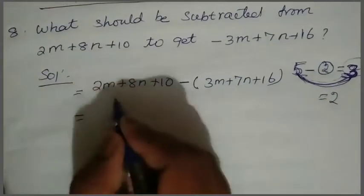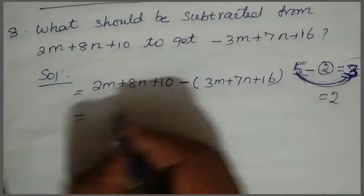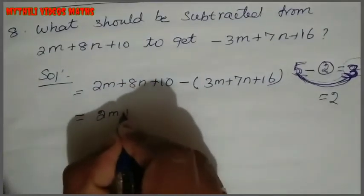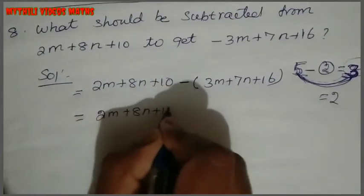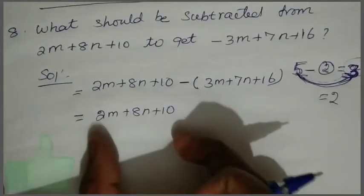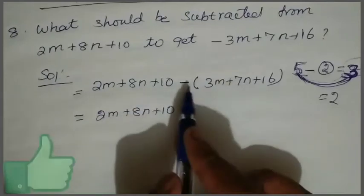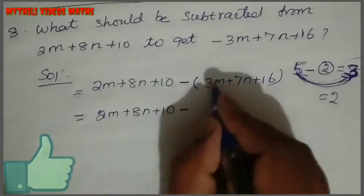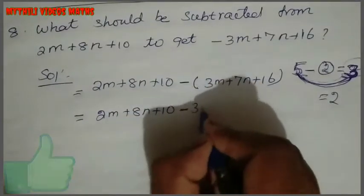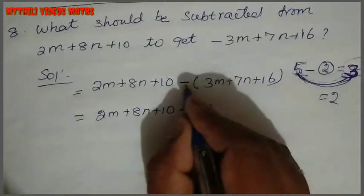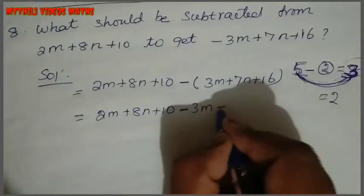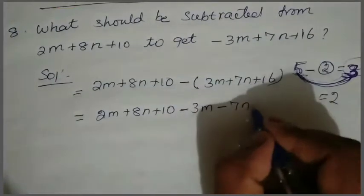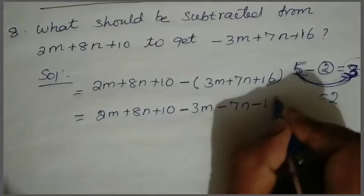Of 3m plus 7n plus 16. If we do it minus, we have to write the sign change. So now just write the first term as it is: 2m plus 8n plus 10, then this minus symbol — 1 minus 3m minus 7n minus 16.